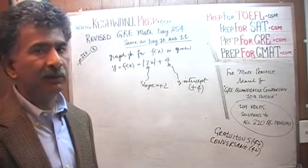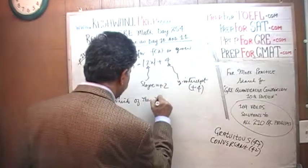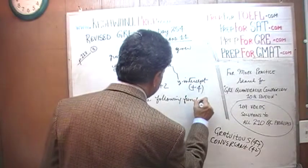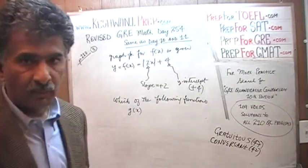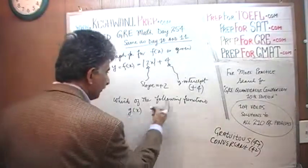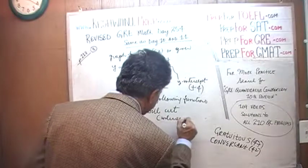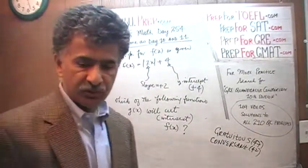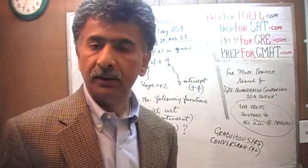The question is: which of the following functions — which they are calling g(x) — will intersect f(x)? The original function is called f; these are just names of the functions. They give us 5 answer choices for g(x), and the question is which of these 5 will intersect the graph that is given to us, which we are calling the function f.